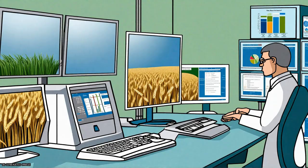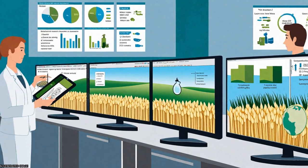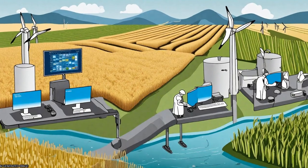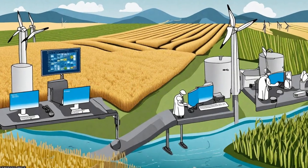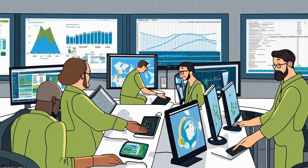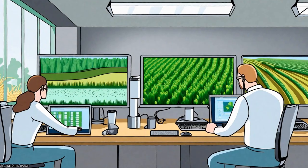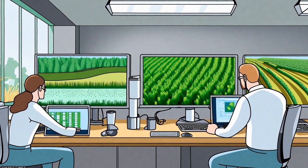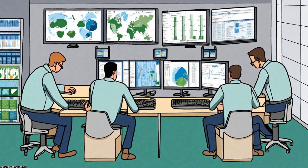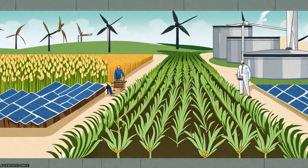The results show that the global average water footprint of wheat per ton of crop was 1,830 m³/ton, with about 18% of the water footprint related to production meant not for domestic consumption but for export.